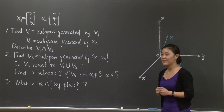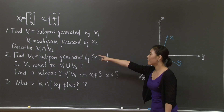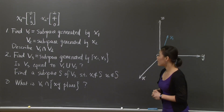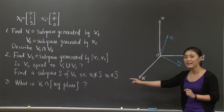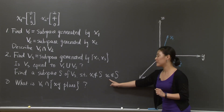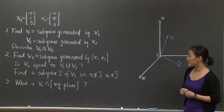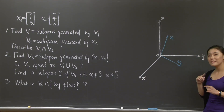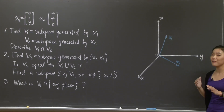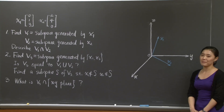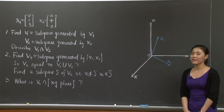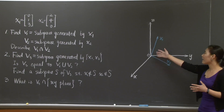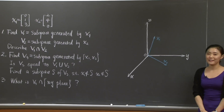A good question to be asked is: what is the relation of v3 to v1 union v2 — do you think they're equal? Within the second question, I'd also like you to find a subspace, call it S of v3, such that neither x1 nor x2 is in S. And the last question: say something about the intersection of v3 with the xy-plane. Notice that the xy-plane is also a subspace of R3, so we're looking at the intersection of two subspaces. Why don't you pause now and try to solve these three problems on your own, and identify your answers in this picture whenever you can.